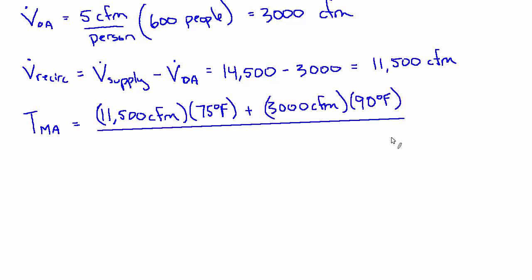divided by the total CFM, 14,500, and that equals 78.1 degrees. That's the mixed air temperature, and that's the temperature of the air that's entering the coil. So that is another one of the answers that we need.